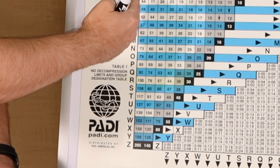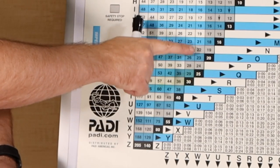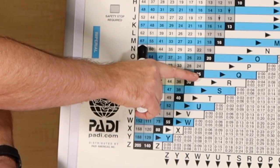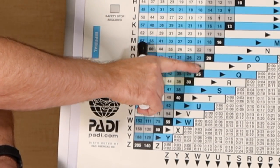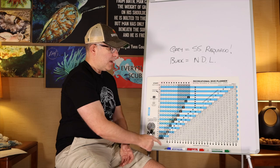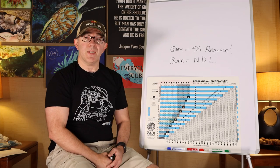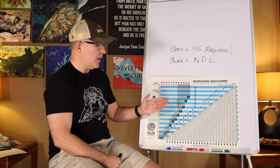You will notice that for a hundred feet or greater, all of those boxes are gray, meaning a safety stop is required on the way back to the surface. On this side of the hundred feet mark, once you get within three pressure groups over your non-decompression limit, there is also a gray box, and you should perform a safety stop on the way to the surface.